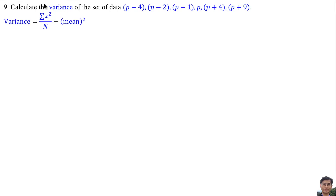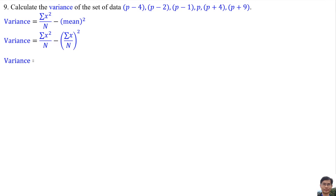This is the formula of variance, and the formula of mean is this. Variance is the summation of x squared — that is the summation of the squares of all these numbers.